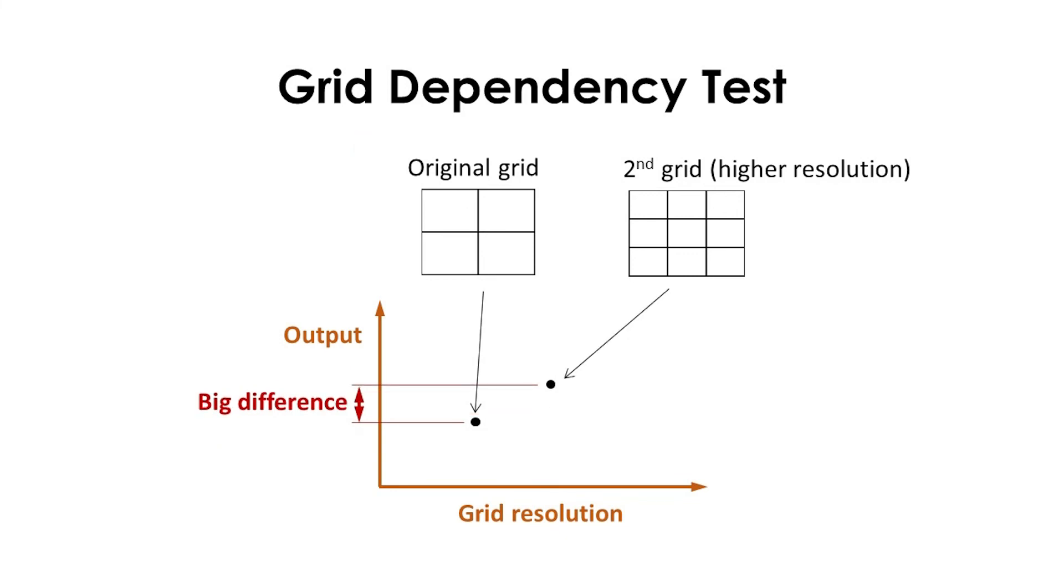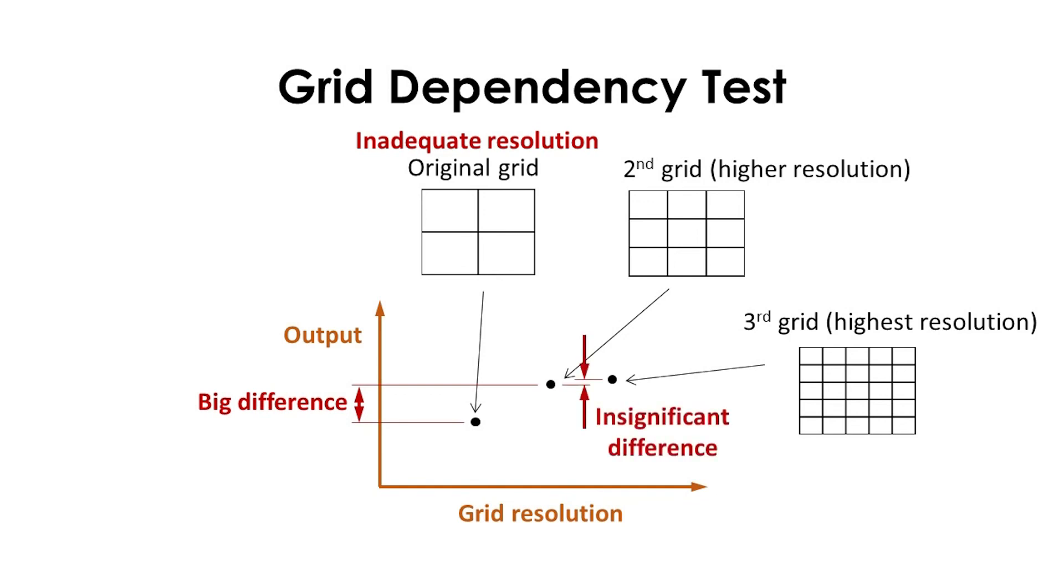However, if there is a significant change in the solutions obtained from the grid of higher resolution, it means the original grid is likely inadequate. In such a case, an even finer grid should be tested until the grid is adequately resolved.